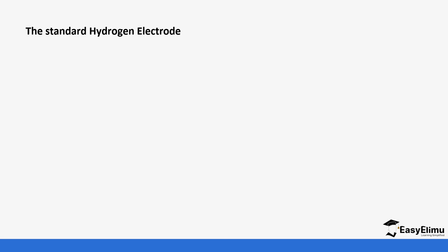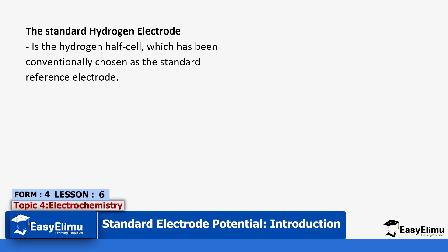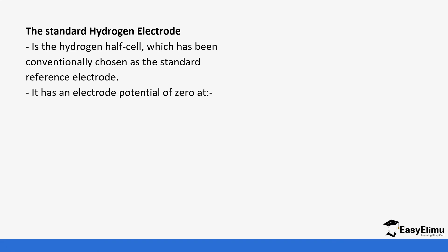Let's look at the standard hydrogen electrode. It is a hydrogen half cell which has been chosen as the reference electrode. It has an electrode potential of zero. So if you are given a table in the exam and you notice the standard electrode potential is zero, you know that is the reference electrode — in most cases it's the hydrogen electrode.